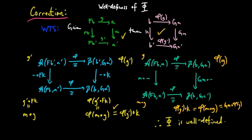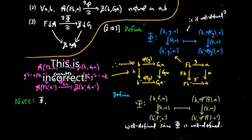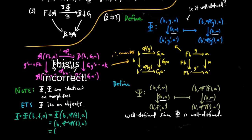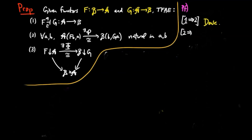Therefore big Phi is well-defined. By symmetry, we define big Psi to take an object (B, F, A) to (B, little phi inverse(F), A) and morphisms (K, M) to (K, M). By the same reasoning for big Phi, this is well-defined. Since big Phi and big Psi are identical on morphisms, to show big Phi is an isomorphism it is enough to show big Phi is an isomorphism on objects — but this is clear since little phi is an isomorphism. Therefore big Phi is an isomorphism, and the commutativity of the triangle in the condition is by the definition of the functor big Phi. So 2 implies 3 is done.